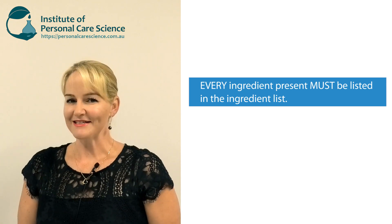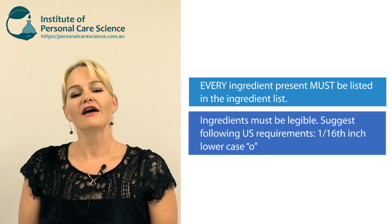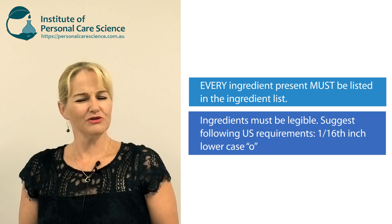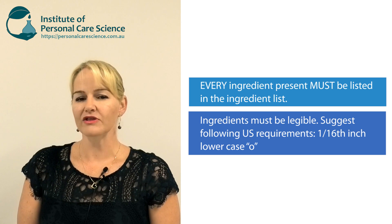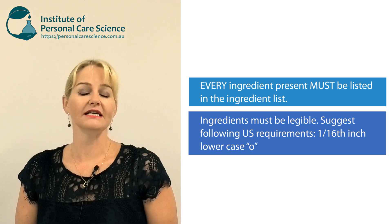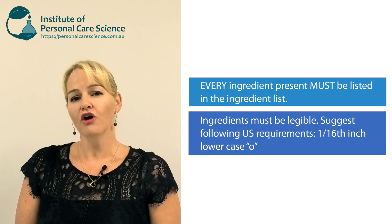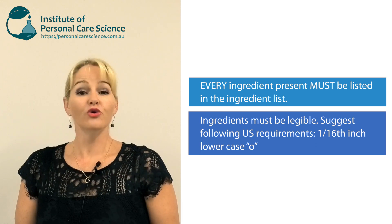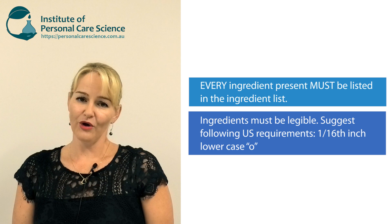Size matters. Regulations around the world state that the ingredient list must be legible. What is legible? Well, the US does give us some guidance on this and requires that ingredient lists are provided in text size 1/16th of an inch for the lowercase 'o'. You could use that as good guidance for other labels around the world.